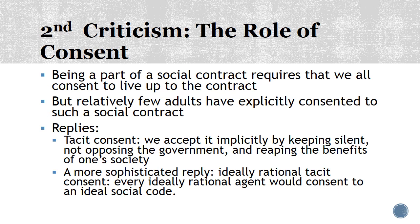The social contract theorist has a kind of reply to the lack of explicit consent. One reply is tacit consent: we accept it implicitly by keeping silent, not opposing the fact there's a government, and reaping the benefits of society. If you go along, cooperate, and get the benefit of everybody cooperating with you, you're sort of implying that you're going along with it — making the same kind of promise that everyone else implies. This is a reasonable response, but a little weak, because how do you know what the contract is if you didn't explicitly agree to it? A more sophisticated reply is ideally rational tacit consent: every rational agent would consent to an ideal social code. Yeah, some people don't really think very clearly, and that's what the government is for — otherwise we could simply make an agreement and everybody could follow it. But any really ideally rational agent would set up society of the kind much like we have.